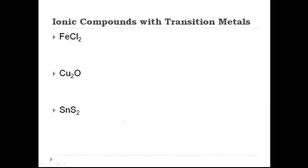So we talked in the last lesson about transition metals that require the stock system. It's a little bit more challenging to write the names of these compounds because we have to figure out what Roman numeral to use. To do this, we're going to use the opposite of the process we used in the last lesson. We crossed the charges last time; this time we're going to uncross them to figure out what the charge for the transition metal is.